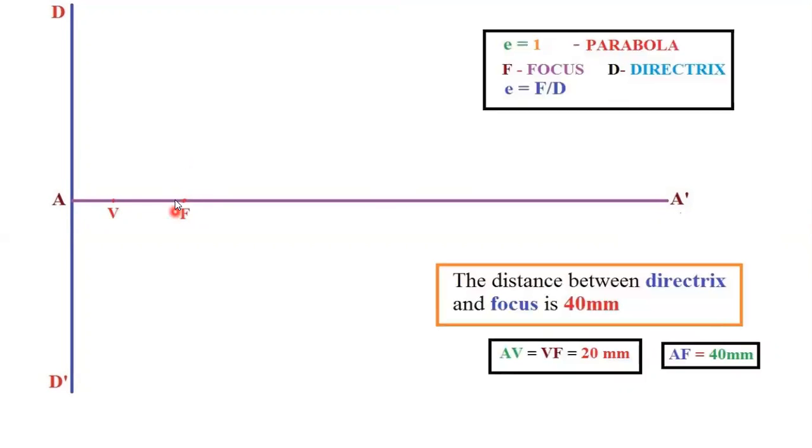Next step is, we need to fix the focus. For fixing the focus, we can get the help of the eccentricity ratio. Eccentricity is nothing but distance from focus divided by distance from directrix. F will be denoting focus and D means directrix. Since eccentricity value is 1, whatever distance is AF, that is distance from directrix and focus, will be half of it. That is, AF is equal to 40mm. Then VF will be half of it, so 40 divided by 2. So AV equal to VF equal to 20mm. From focus, take 20mm and place a point and that point is called the vertex.